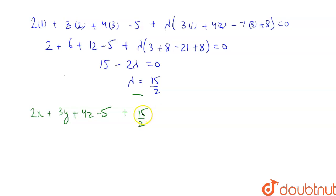15 by 2 into 3x plus 4y minus 7z plus 8 is equals to 0. So this becomes 4x plus 6y plus 8z minus 10 plus 45x plus 60y minus 105z plus 120 is equals to 0.